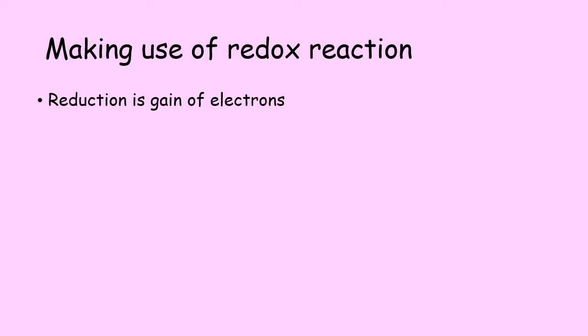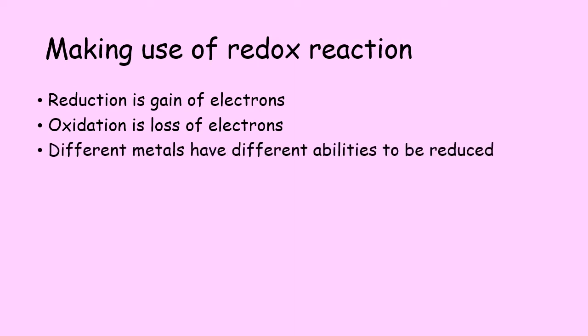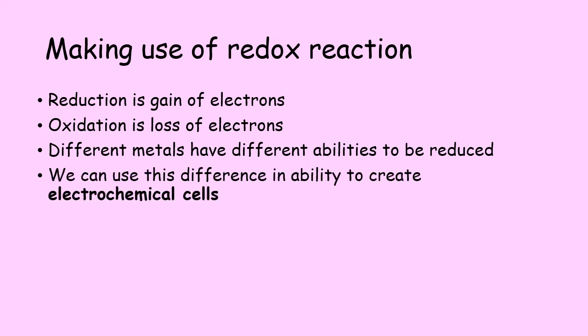So some recap: reduction is the gain of electrons by a metal or by any material, and oxidation is the loss of electrons. Different metals have a different ability to be reduced. Some metals or metal ions will be reduced much more easily than other ones, and we can exploit this difference in ability to create things called electrochemical cells.